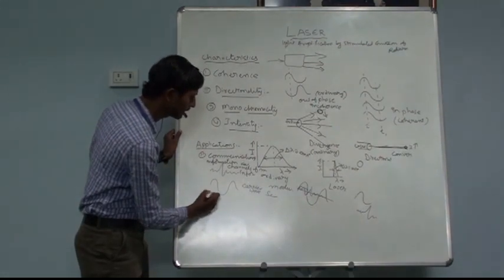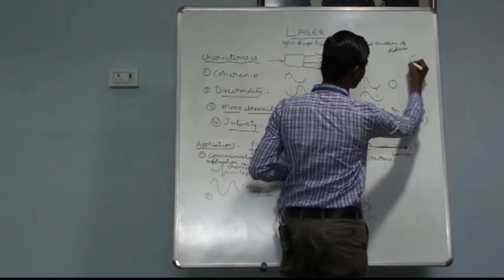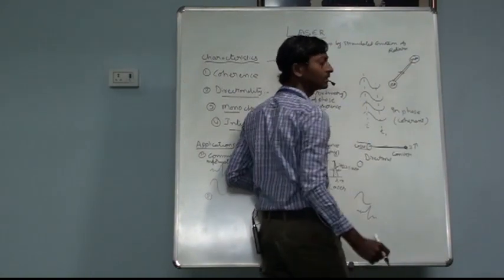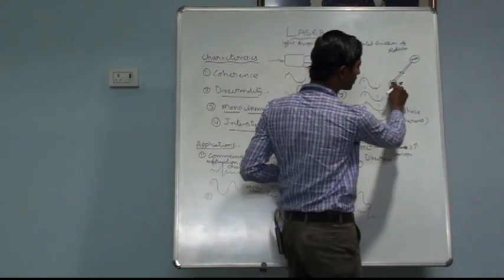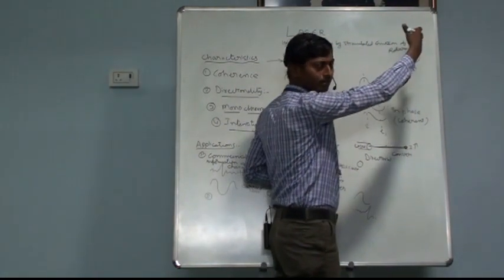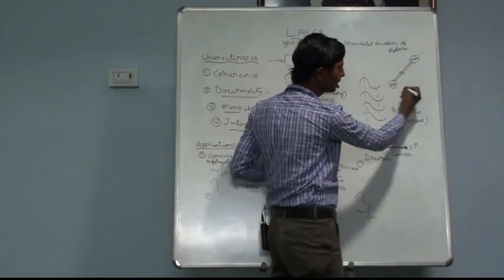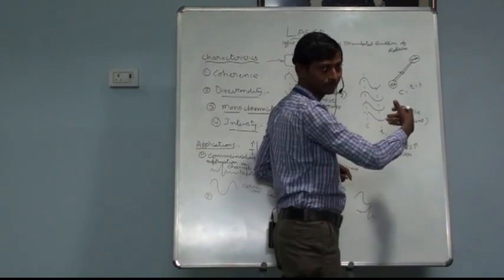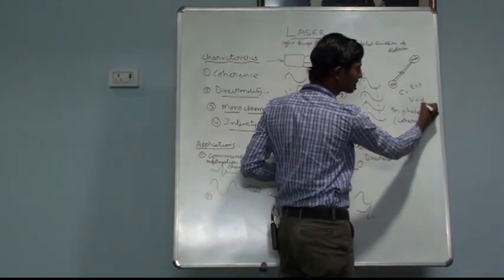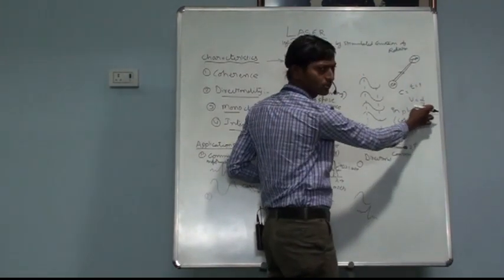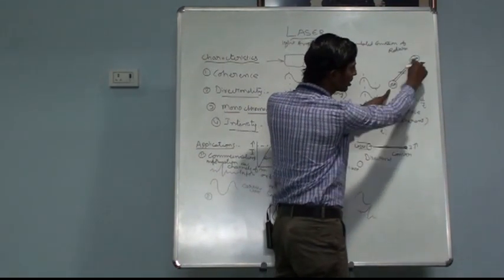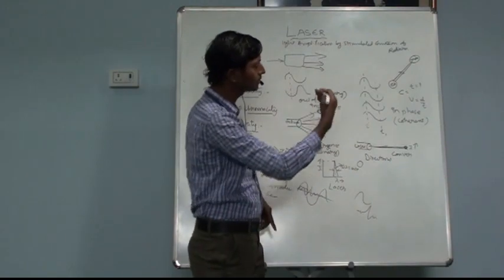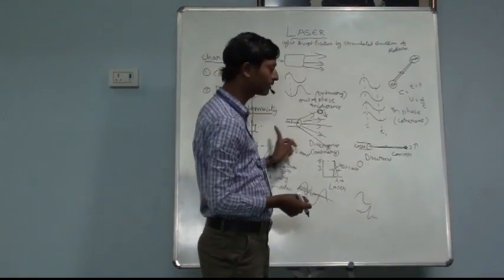Not only in the communication field — we can also calculate the distance from the Earth to the Moon using laser. A laser beam is directed towards the Moon, and after reflection it comes back. We know the speed of light is 3×10⁸ meters per second. By calculating the time interval for the laser light to return, and using the relation velocity equals rate of change of distance, we can calculate the Earth-to-Moon distance successfully.